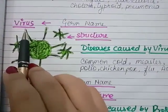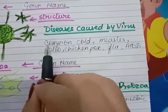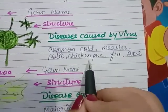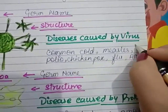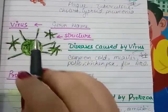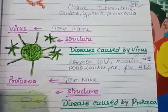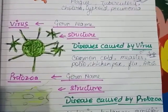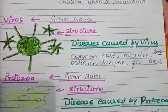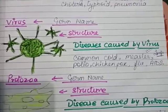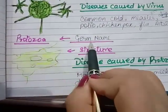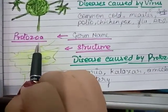The diseases caused by the virus are: common cold, measles, polio, chickenpox, flu, and AIDS. This is very important, so please learn these. I am giving you a homework: make the diagram of the coronavirus which you can see on television in the news regularly.